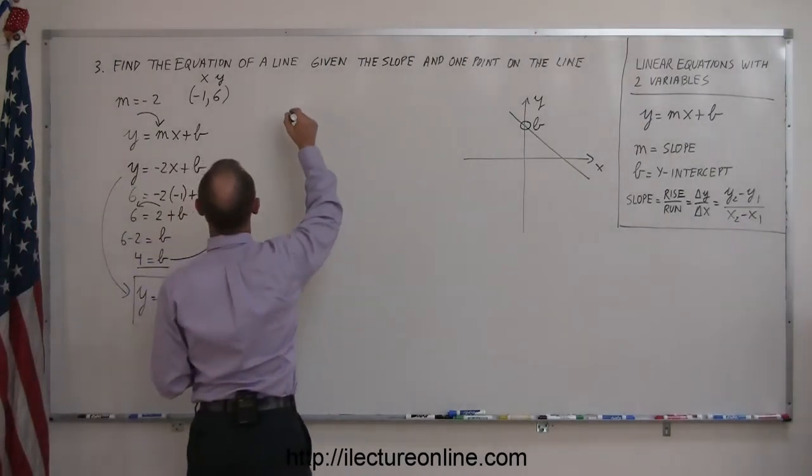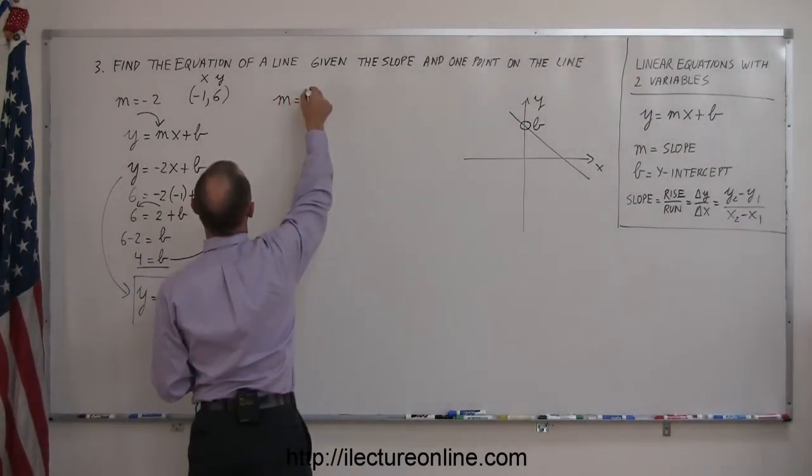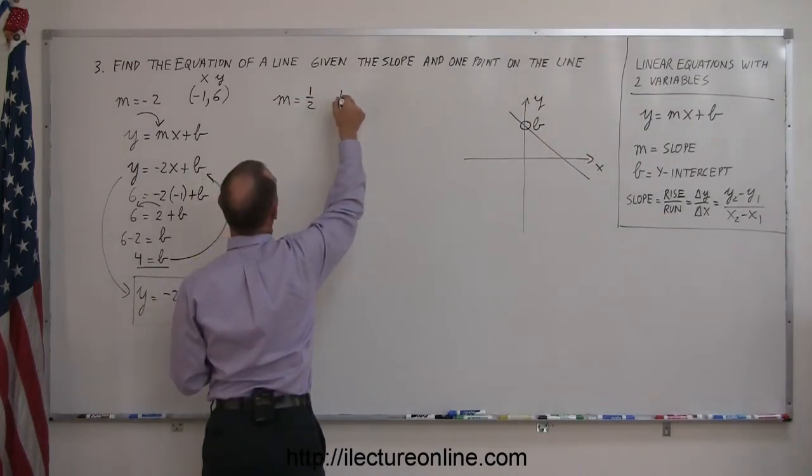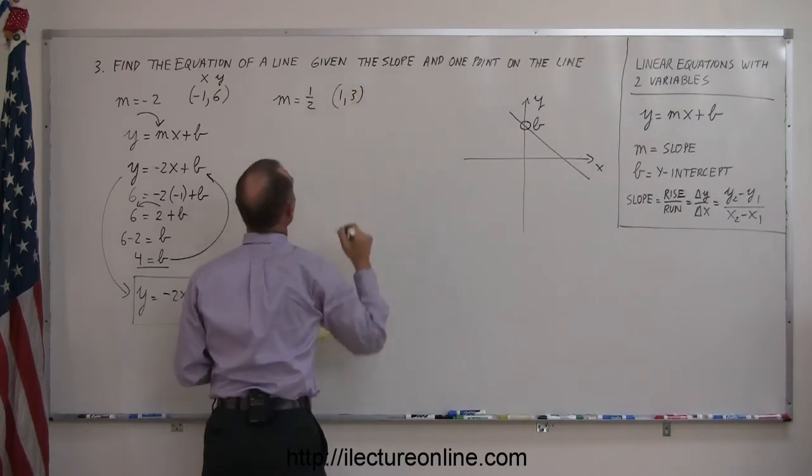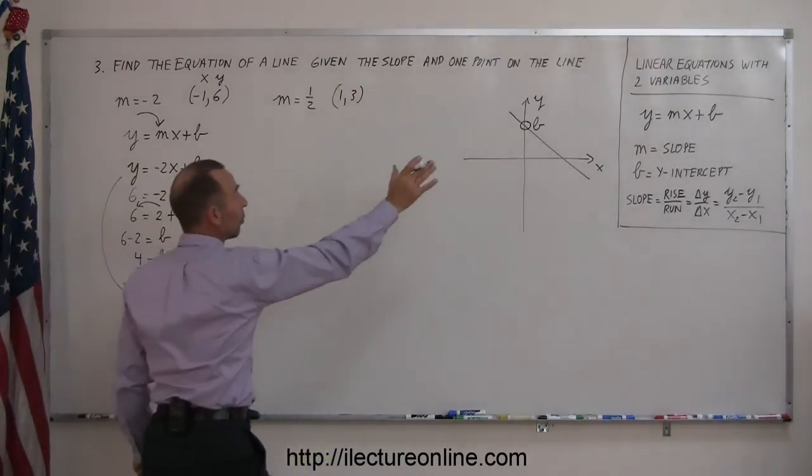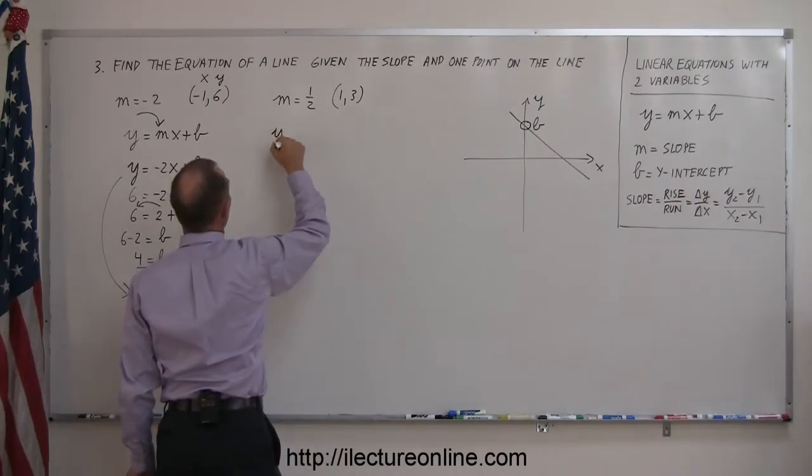Let's say I have another equation to look for where the slope is equal to 1 half, and the point on the line is 1, 3. Again, start with the general equation, y equals mx plus b, write that down.